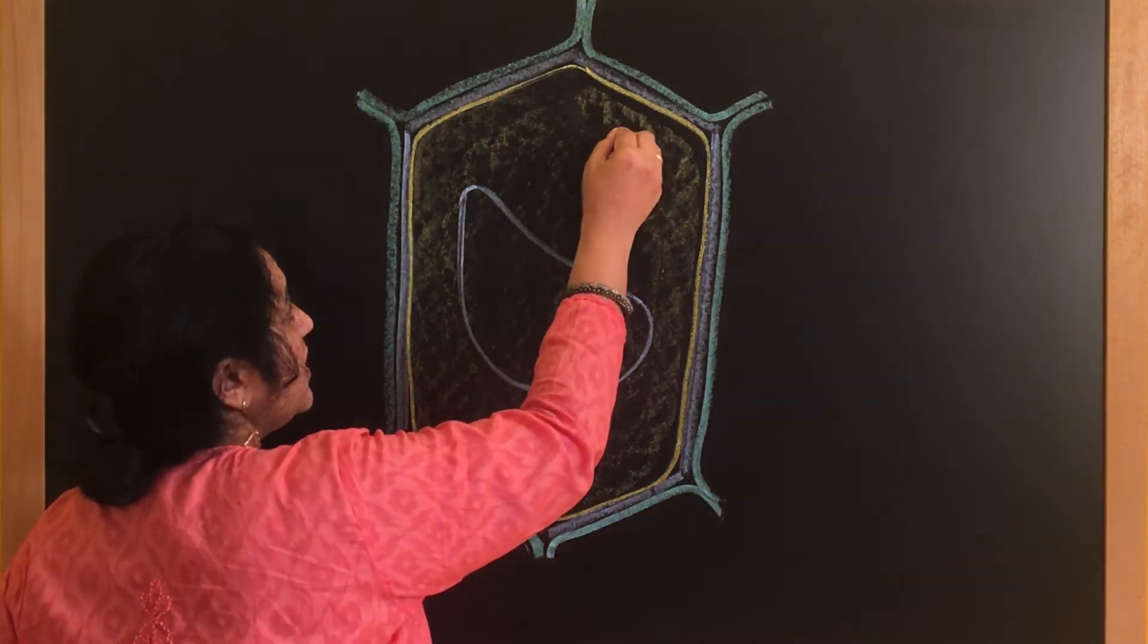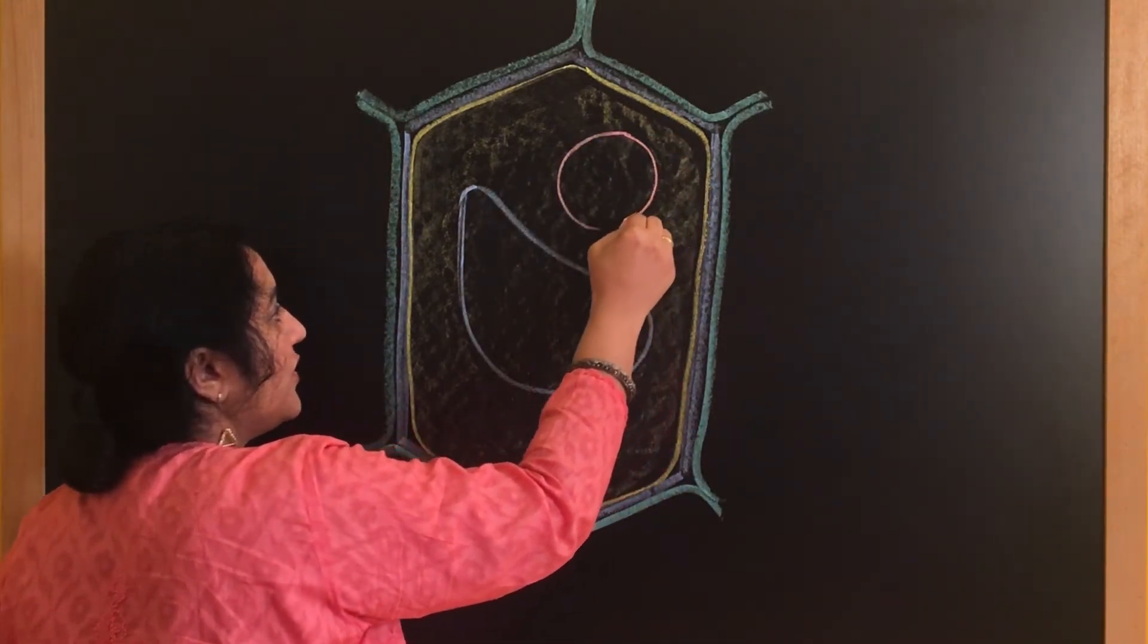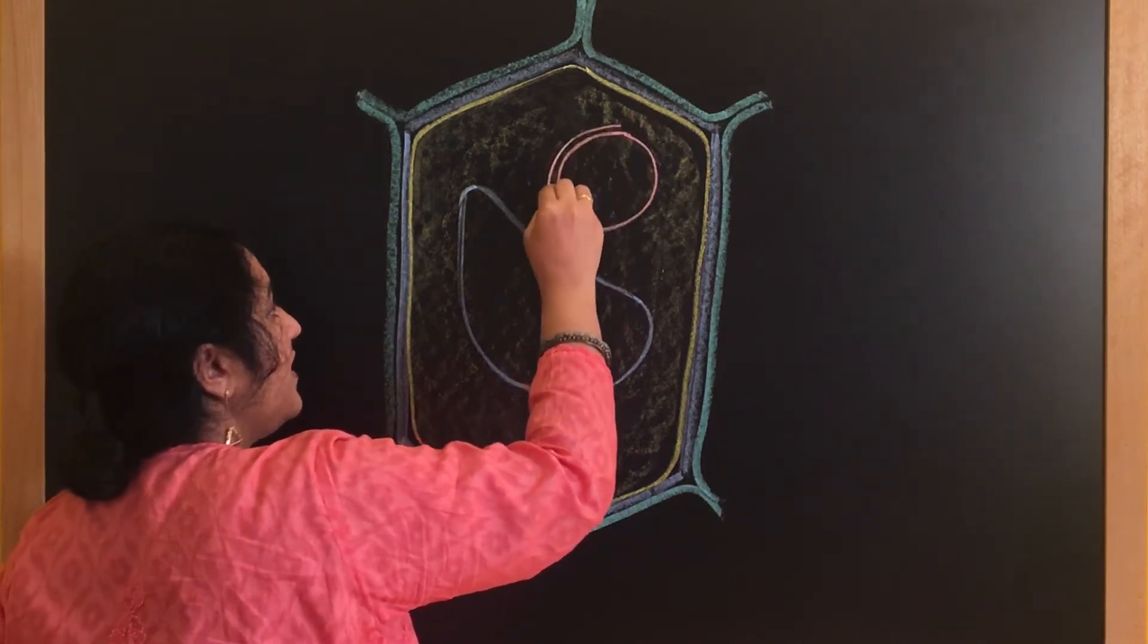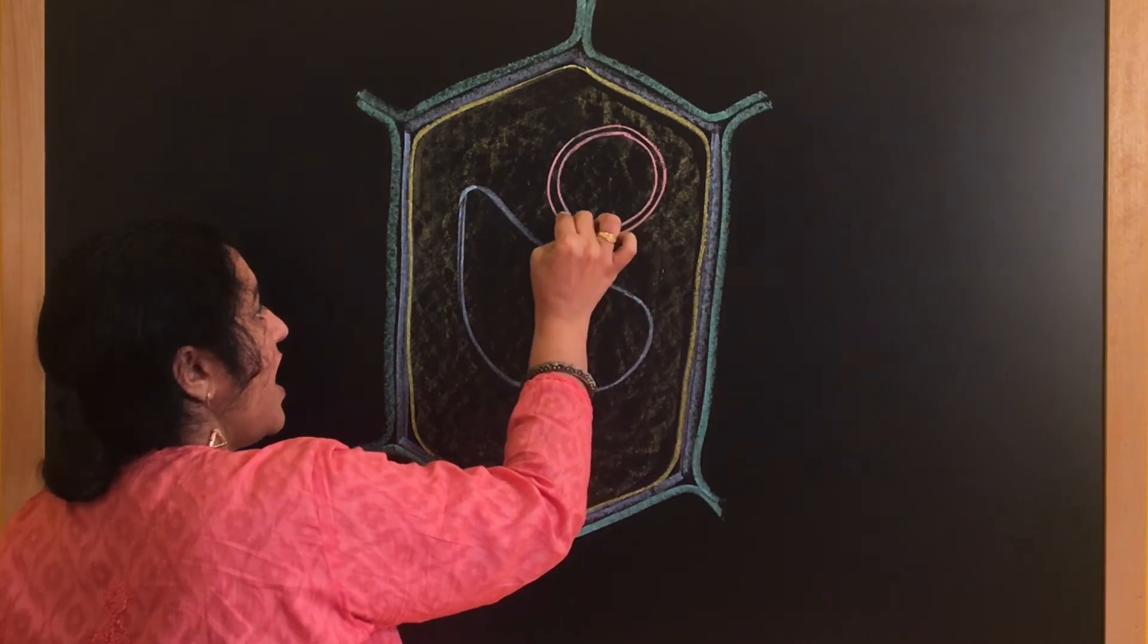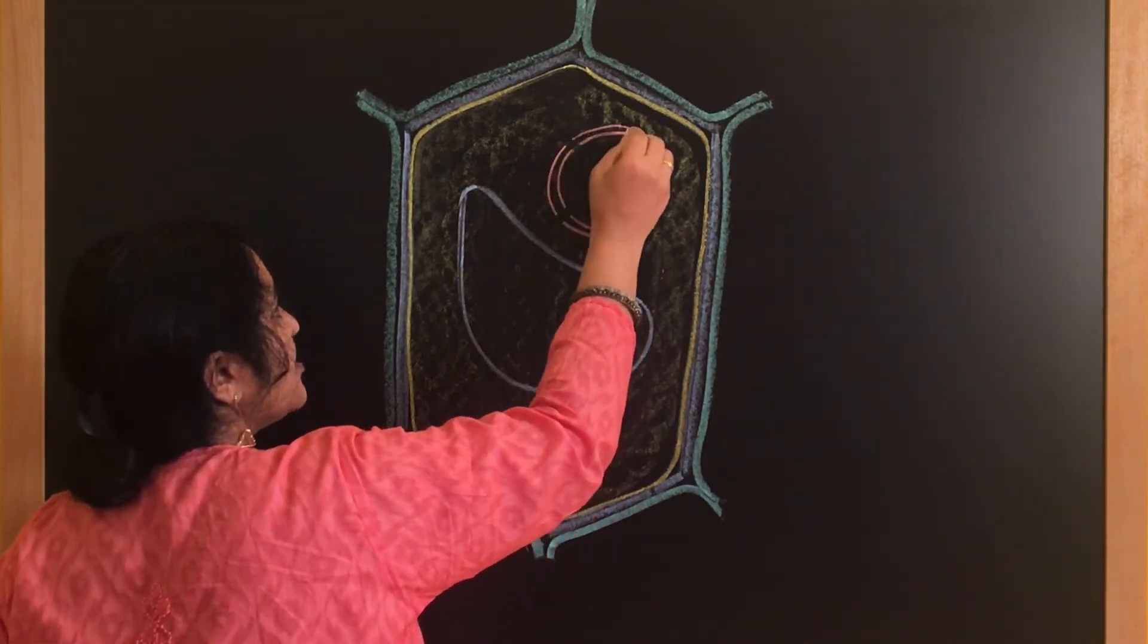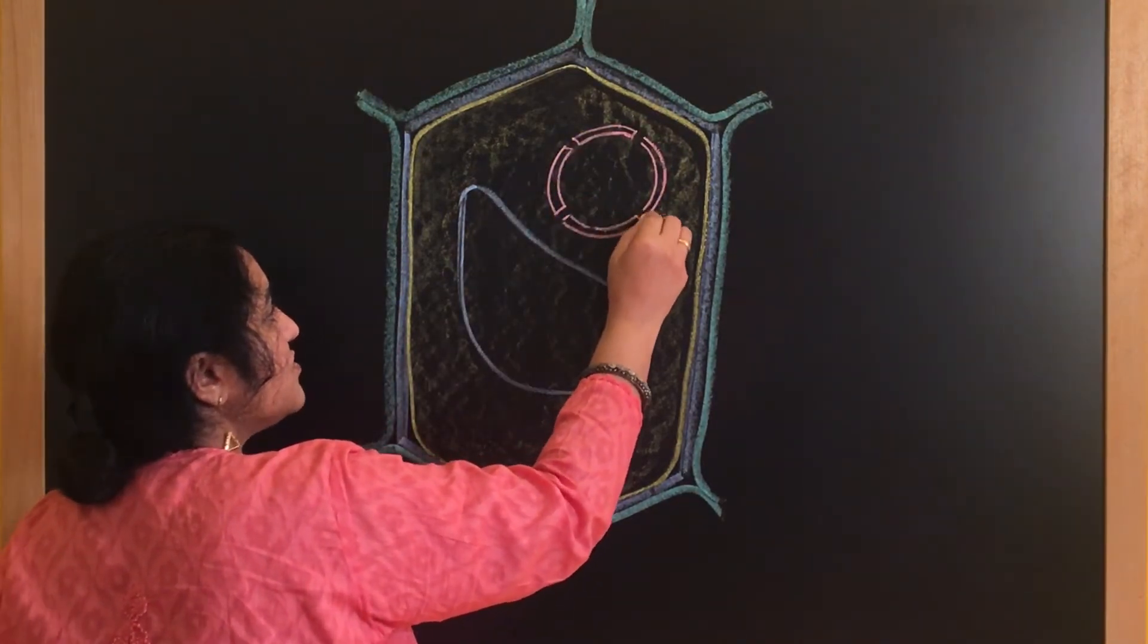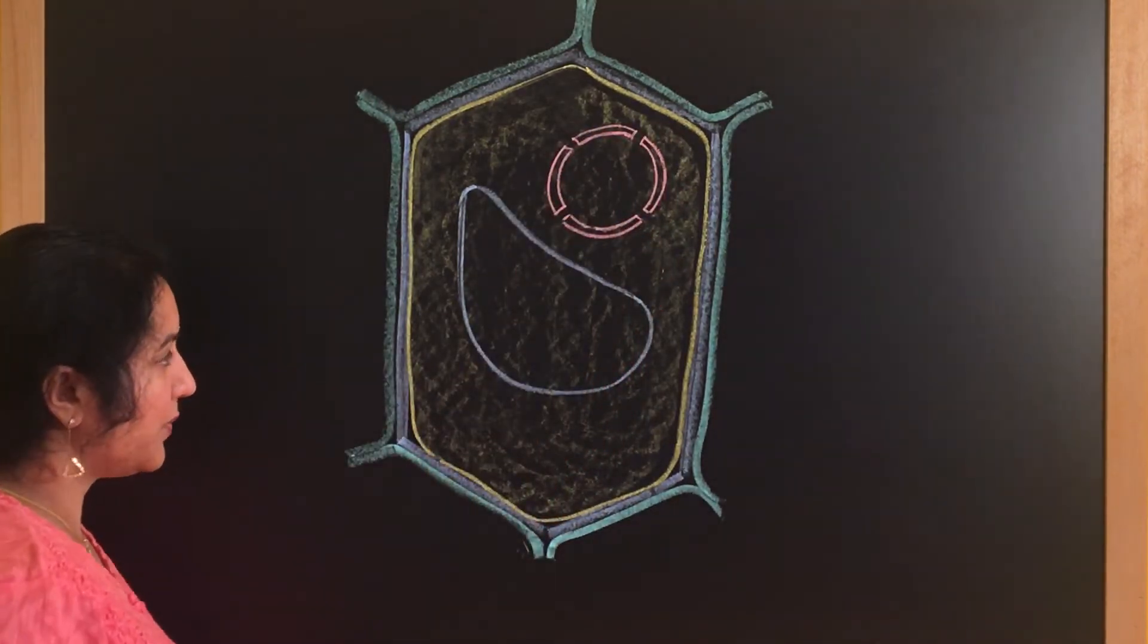So I will draw a nucleus here towards this corner. The nucleus, as you know, is surrounded by two membranes, a double-walled membrane. And these membranes are porous for entry and exit of molecules in and out of the nucleus. So you can draw these pores here. Just draw these lines and you can see the nuclear pore.